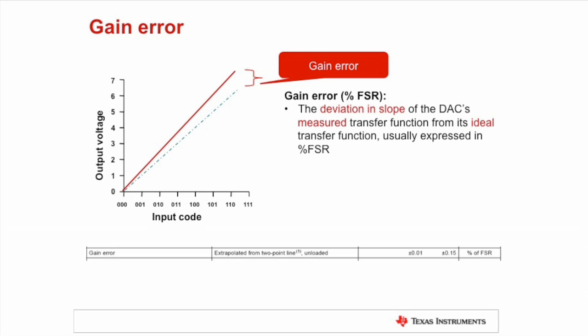Similar to Offset Error, this is based on a line of best fit taken from a two-point measurement on the DAC output near 10% and 90% full-scale range. Gain Error is present in all precision DAC architectures.